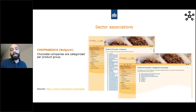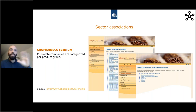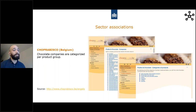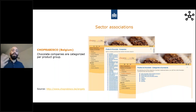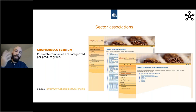Going back to this association — you can also browse according to different segments. Based on your product, you can relate it to the different segments the organization organizes companies around — for example, bulk chocolate, spreads, candy bars, chocolate sweets, etc. You can navigate these associations keeping in mind that not everyone is a match for you, but the ones that are, you can find them there.